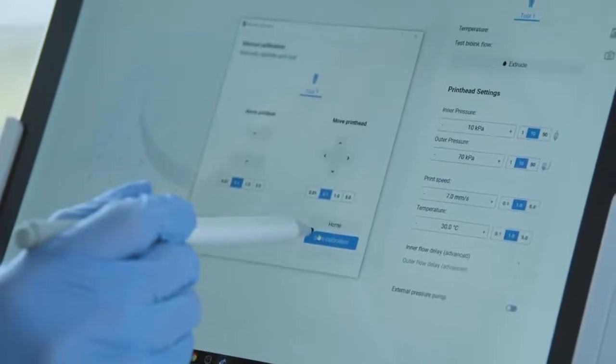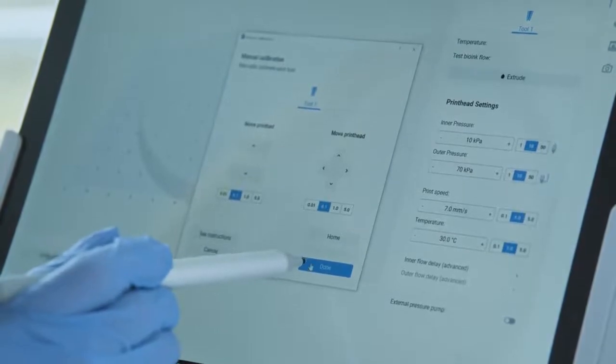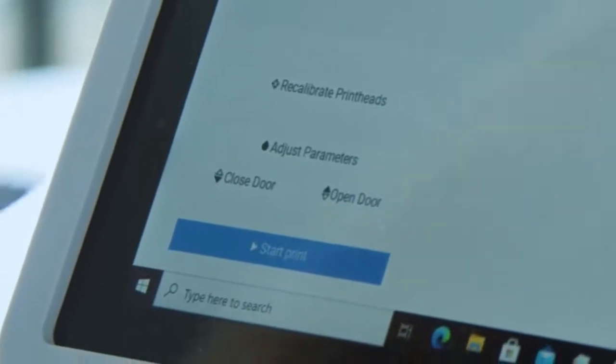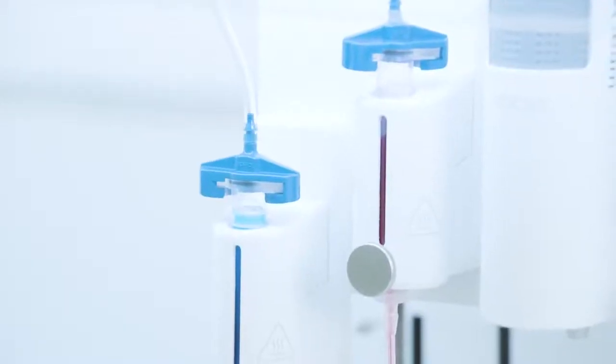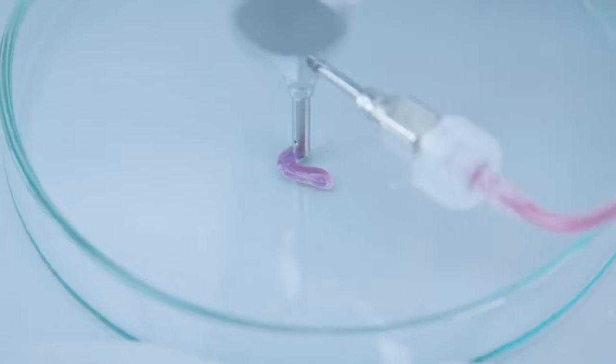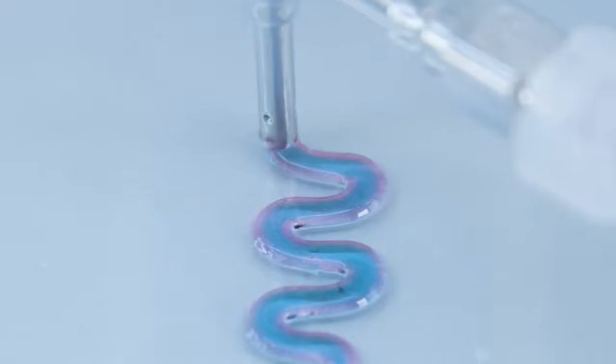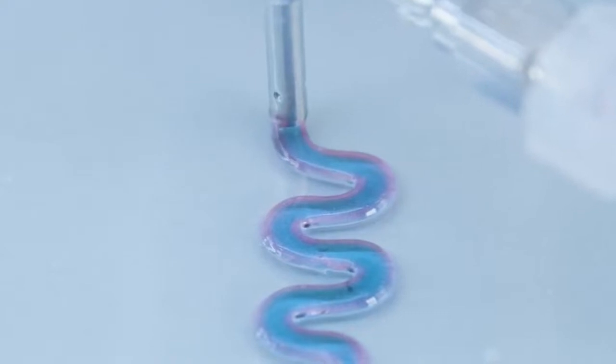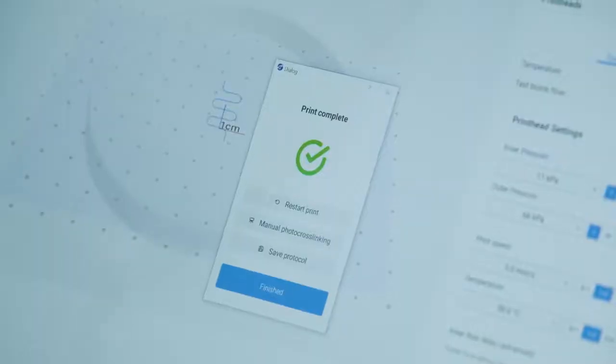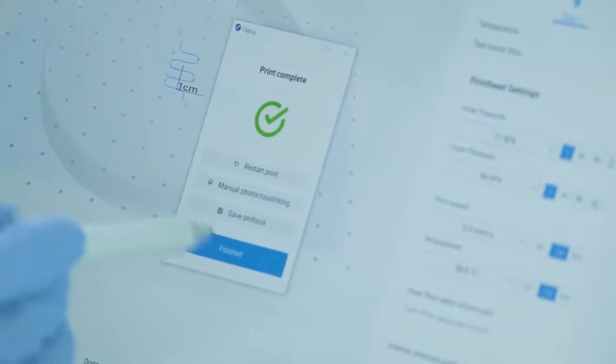Okay, this is perfect. Save the calibration and done. The setting is ready to print and now start print. As you can see clearly, the inner layer in blue and the outer layer is in red. After printing you can save your protocol, go through cross-linking process based on your bioinks, or restart printing.